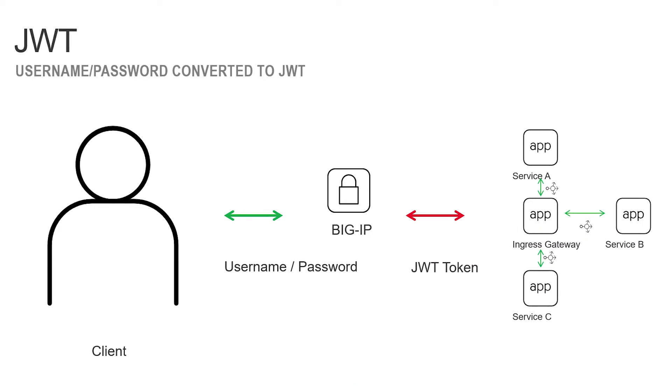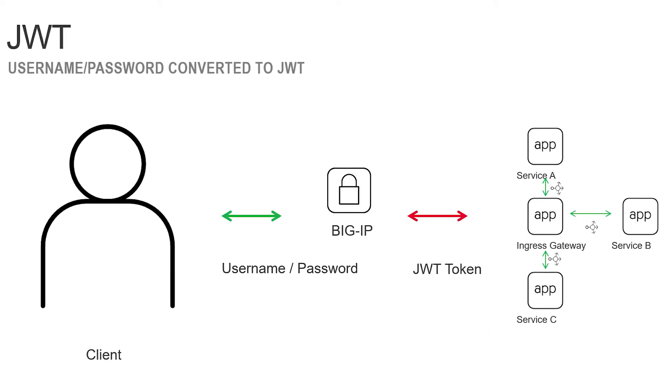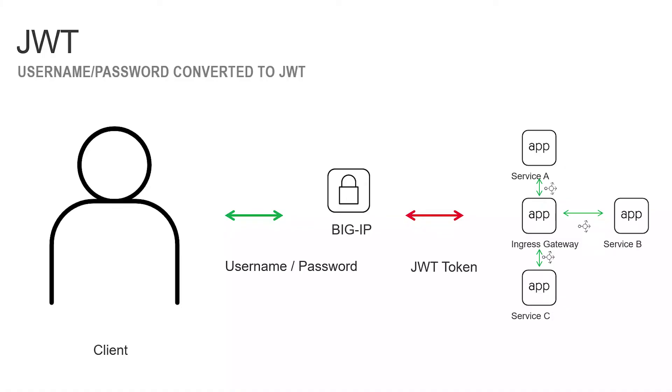In the third example, we'll look at using the BIG-IP to convert a username and password to a JWT token that is trusted by Istio. This is useful in cases where the BIG-IP may take a username and password, authenticate it to a legacy source like Active Directory, and then convert this into a JWT token that is understood by Istio.